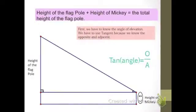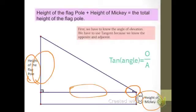To know the total height of the flagpole, you use the height of the flagpole plus the height of Mickey. First, we have to know the angle of elevation here, and we use tangent because we know the opposite side and the adjacent side.